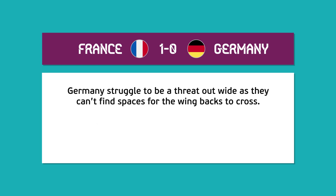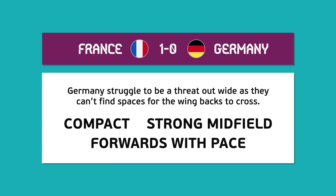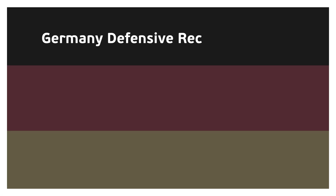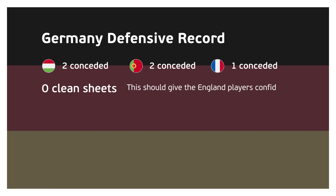If England are compact with a midfield three that are defensively strong, with forwards possessing speed to counter Germany, this may be the setup that hurts Germany the most. On Germany's side, while they will be concerned by how many they've conceded — two against Hungary, two against Portugal, and one against France — no clean sheets so far will be on their mind. England also need to have this on their mind, as Germany are there for the taking.